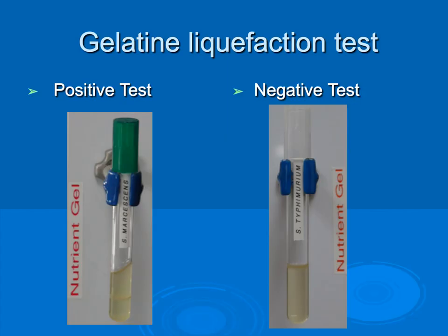The purpose of the gelatin liquefaction test is to determine the ability of bacteria to produce gelatinase that digests and liquefies gelatin. We inoculate our test tubes and place them in the incubator; once incubated with bacteria, it will cause the gelatin to melt. To determine whether or not the reaction has taken place, the incubated tubes must be placed on ice for about five minutes until a control sample would solidify. A positive test would indicate that the gelatin is still liquefied, where a negative test means it has solidified.